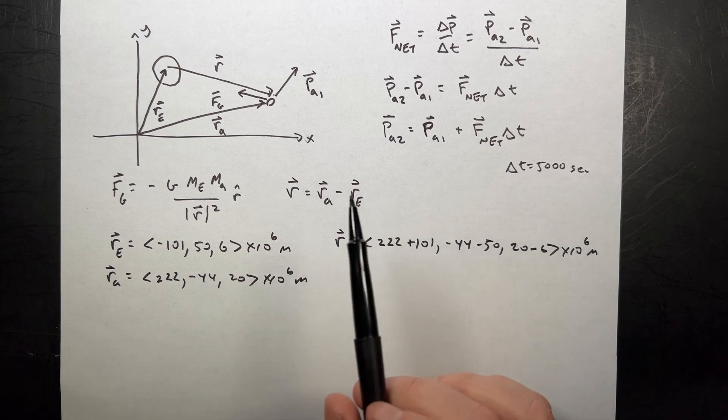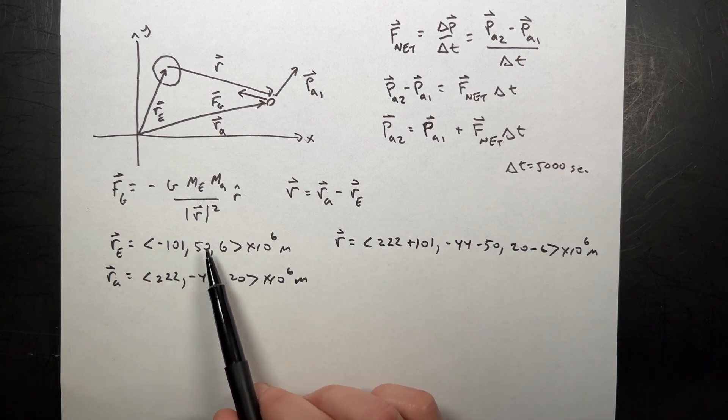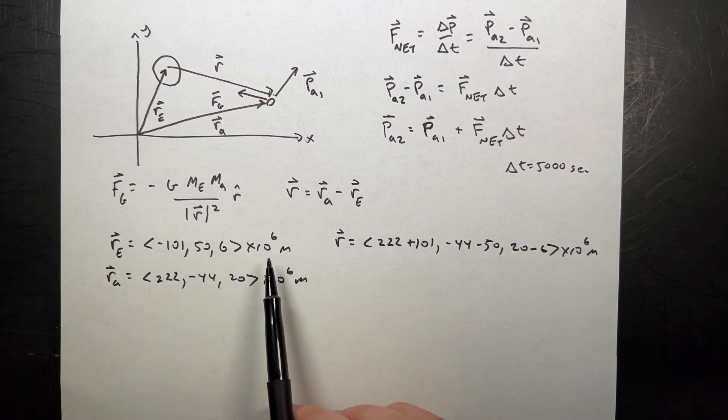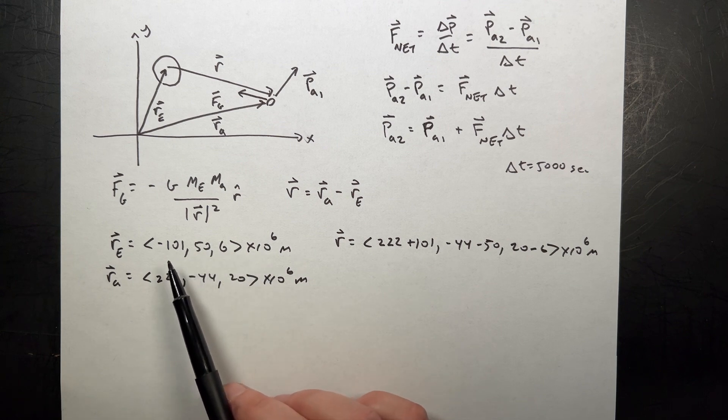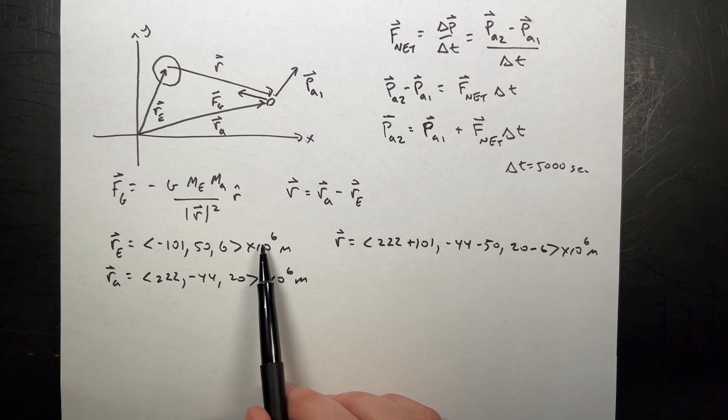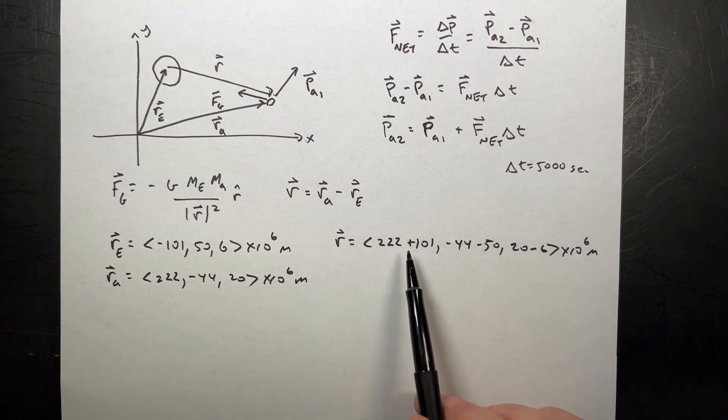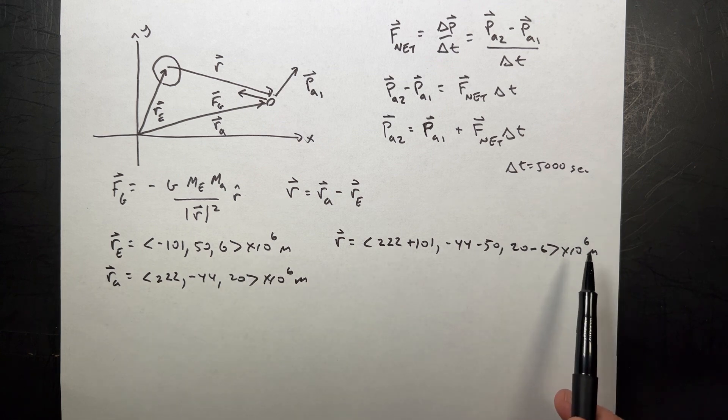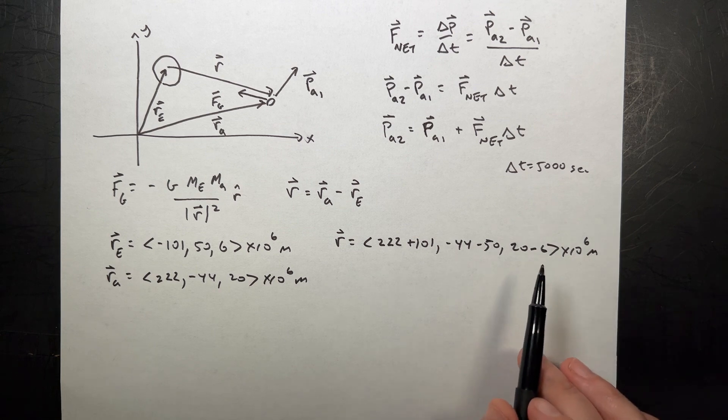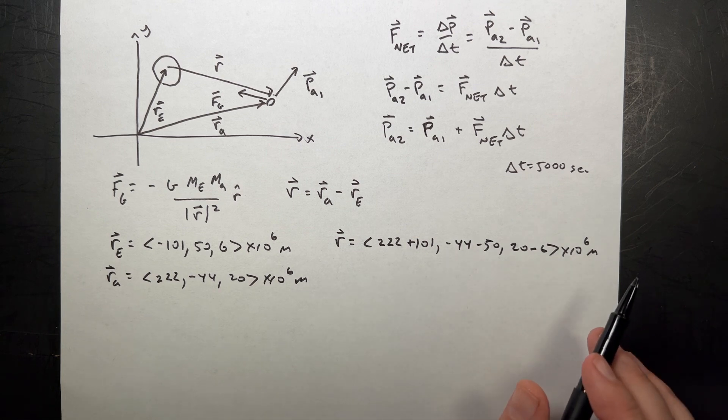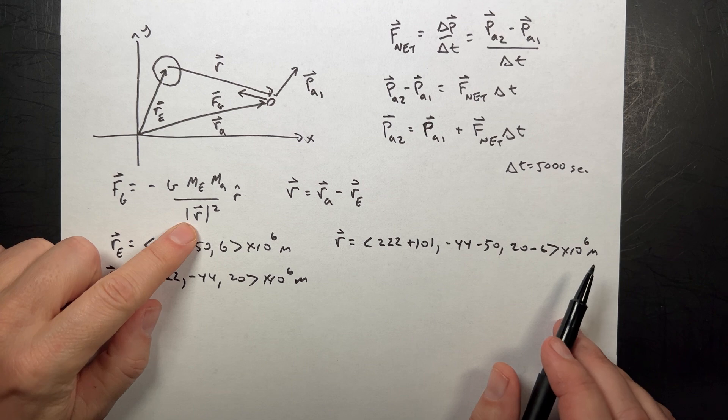So you'll notice I did a little trick here. Instead of putting the scientific notation in with the component, I factor that out. It's just a number. So if I divide everything by that number and then multiply by that number, I didn't change it. So I did that for both of these. And then when I add them together, I just kept that outside. And that's my r right here.